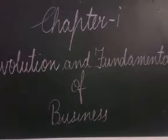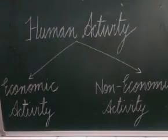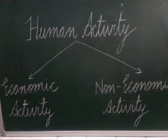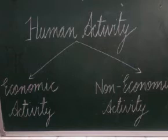In this chapter, first we will understand the meaning of human activity. Human activity means those activities which are undertaken by human beings to fulfill their basic necessities. These are of two kinds: economic activity and non-economic activity. Economic activities are those activities which are undertaken with the motive to earn money or profit.